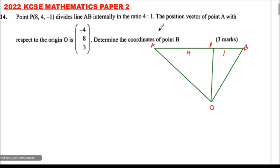We can get the coordinates of P we are given. It is (8, 4, -1). The coordinates of A, since we have been given the position vector of A, we can get the coordinates. Just write the column vector in horizontal form. So, we say it is (-4, 8, 3). We don't know the coordinates of B, so X, Y, Z. So, that is what we want to find out.